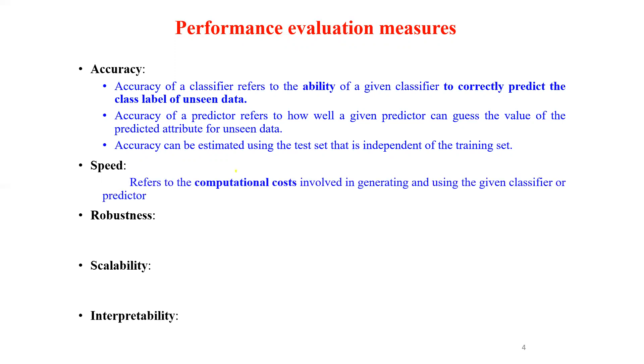Speed refers to the computational costs involved in generating and using the given classifier or predictor. Robustness is the ability of the classifier or predictor to make correct predictions given noisy data or data with missing values.